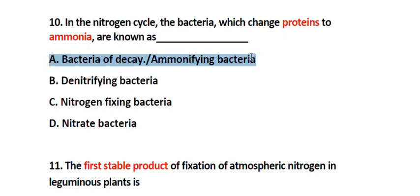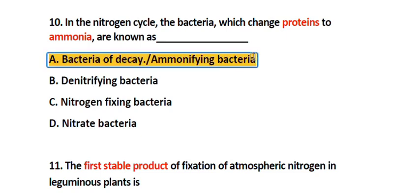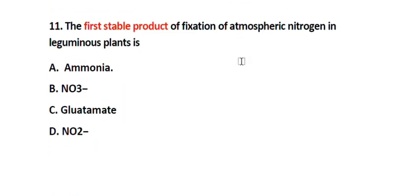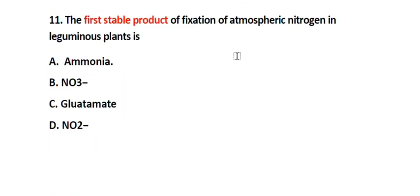Question number 11. The first stable product of fixation of atmospheric nitrogen in a leguminous plant is: Option A. Ammonia, Option B. NO3, Option C. Glutamate, Option D. NO2. The correct answer is Option A. Ammonia.